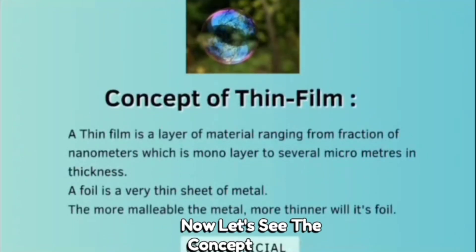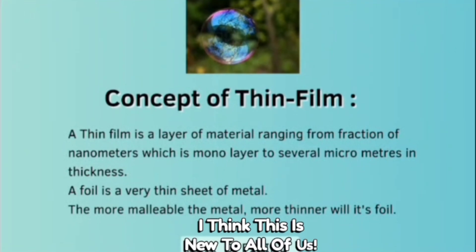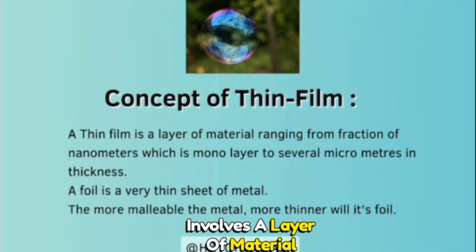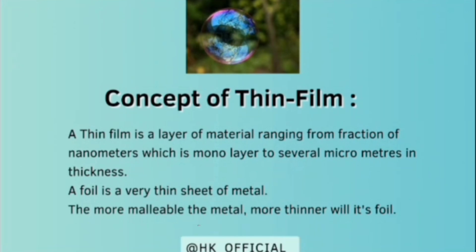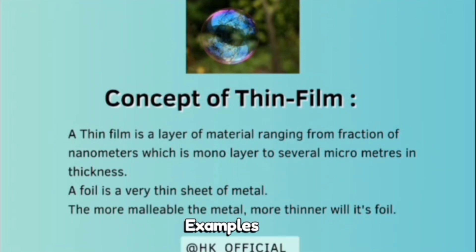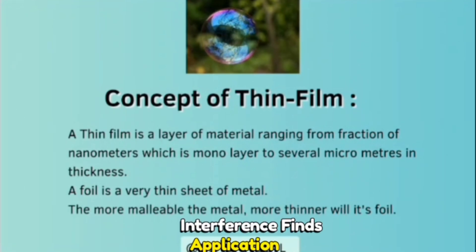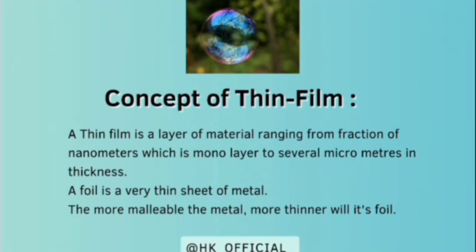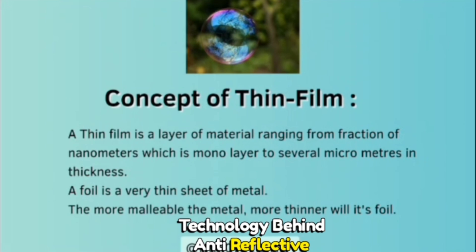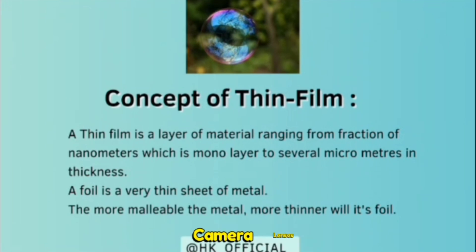Now let's see the concept of thin film. Thin film interference involves a layer of material, often with a thickness ranging from fractions of a nanometer to several micrometers. Examples include extremely thin sheets of metal known as foils or thicker metal plates. The concept of thin film interference finds application in a wide range of fields — from explaining the colorful appearance of soap bubbles to the technology behind anti-reflective coatings on eyeglasses and camera lenses.